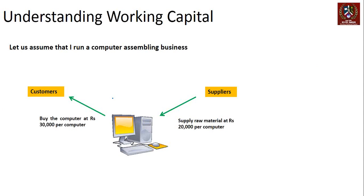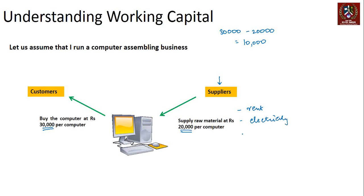To understand working capital, let's assume I run a computer assembling business. There is a set of suppliers who supply raw material at ₹20,000 per computer, and customers who buy the assembled computer for ₹30,000 per computer. So ₹30,000 minus ₹20,000 gives me ₹10,000 as my gross profit, which I use to run business operations — rent, electricity, marketing, salary — and whatever is left is my profit.